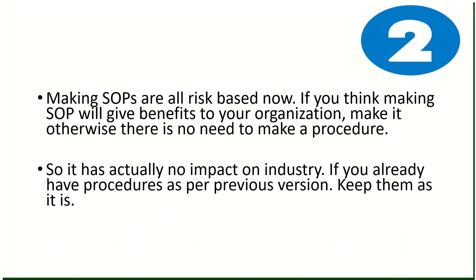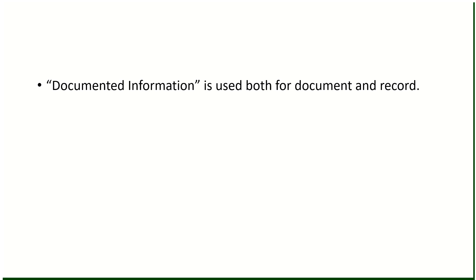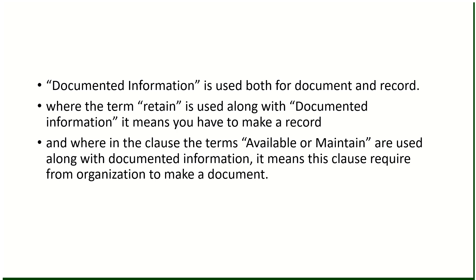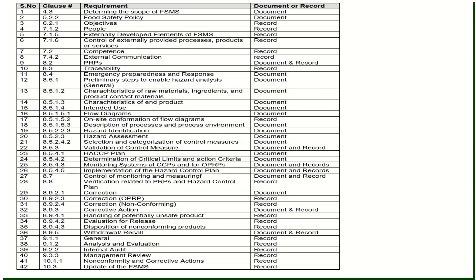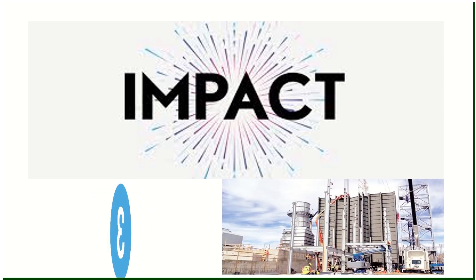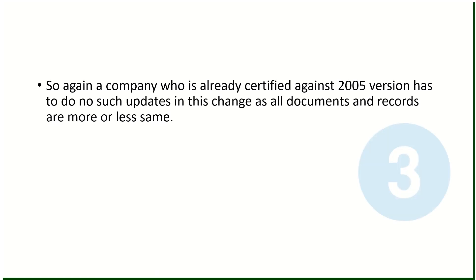Change number three: in the new version, the term 'documented information' is used for both documents and records. You will not find the terms 'record' or 'document' in the standard; however, we still have to make both. Where the term 'retain' is used with documented information, you make a record; where 'available' or 'maintain' are used, you make a document. Impact: no significant updates needed as documents and records are more or less the same.